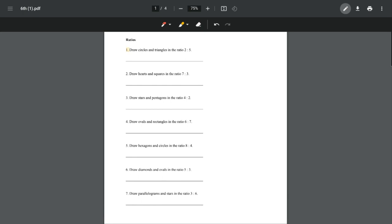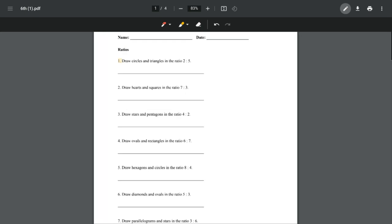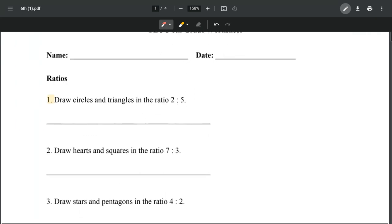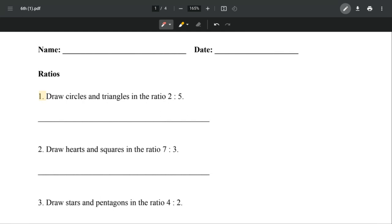Hey guys, this is lesson 24. Let's get started with ratios. They're asking us to draw circles and triangles in the ratio 2 to 5. So circles 2, triangles 5. That means we're drawing two circles and five triangles - 1, 2, 3, 4, 5. Simple and easy like that.